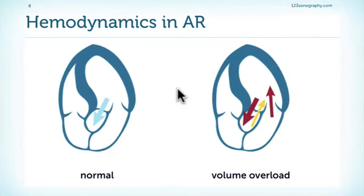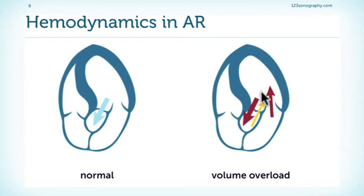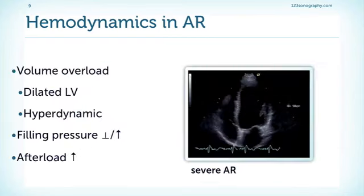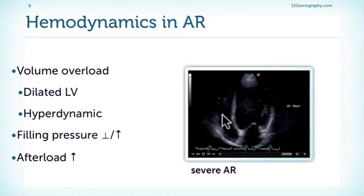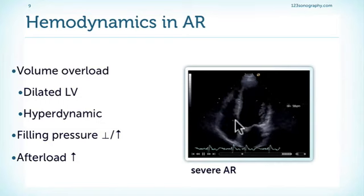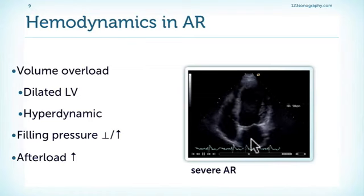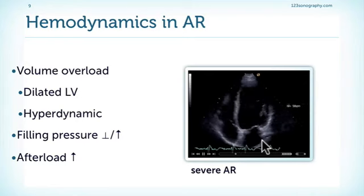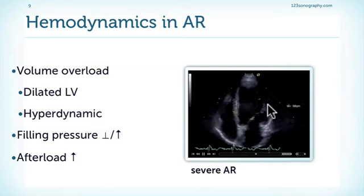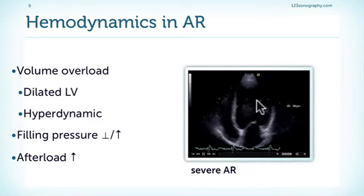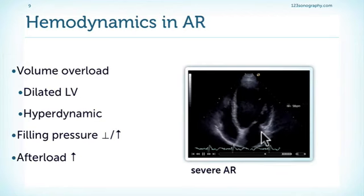The hemodynamic problem in aortic regurgitation is regurgitant flow coming back from the aorta into the left ventricle, forcing the left ventricle to accommodate more volume. There is also more forward flow across the aorta as this volume must be re-ejected. The result is a volume-overloaded, dilated, hyperdynamic left ventricle, and if it begins to fail, elevated left atrial filling pressures. Importantly, patients also have elevated afterload, which becomes relevant in management.